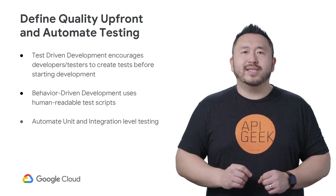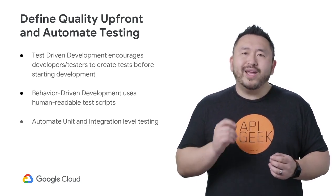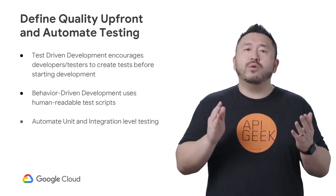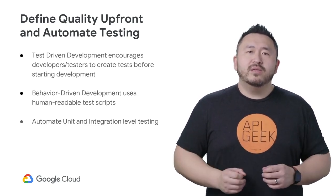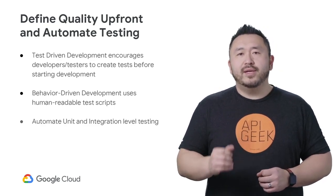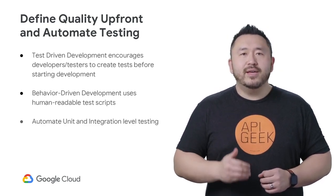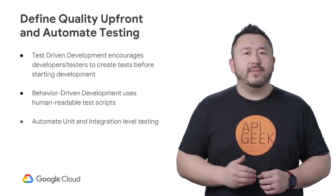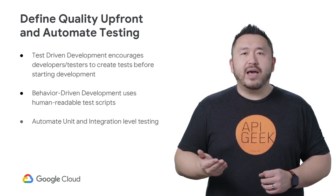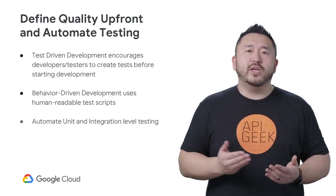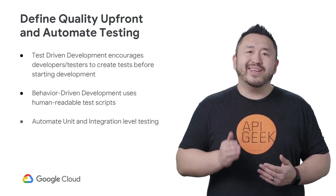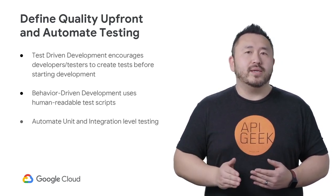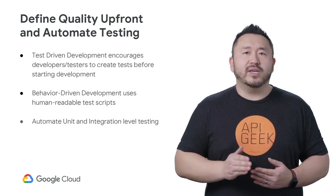Instead of writing test cases after development is complete, write the test cases and define the success criteria upfront in design before the development starts. This practice comes in two flavors: test-driven development and behavior-driven development. Both are very similar and achieve the same outcome. Both methods output code that can then be automated by QA engineers who can string together a series of unit tests and tests written through TDD or BDD to become an integration level test for the API.